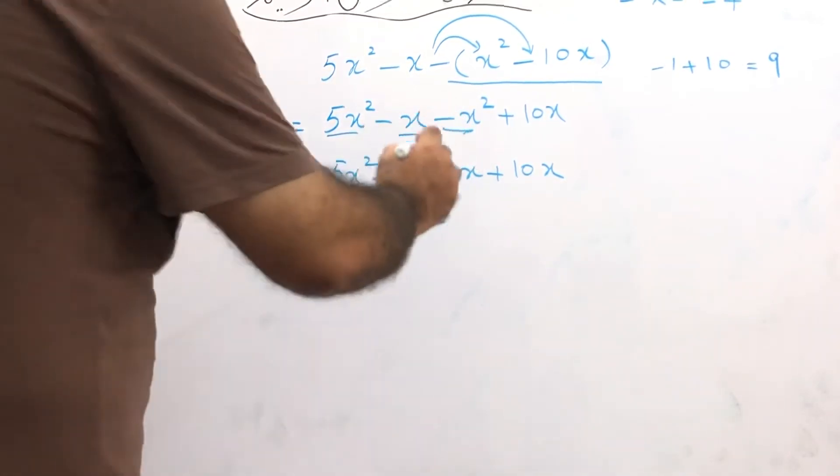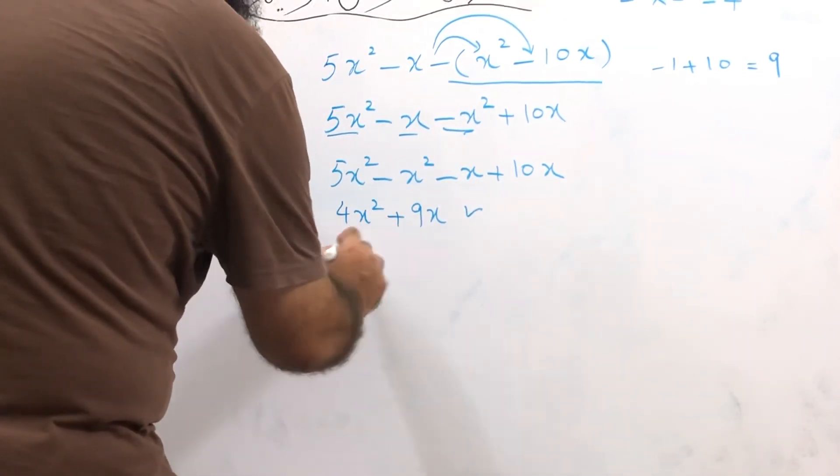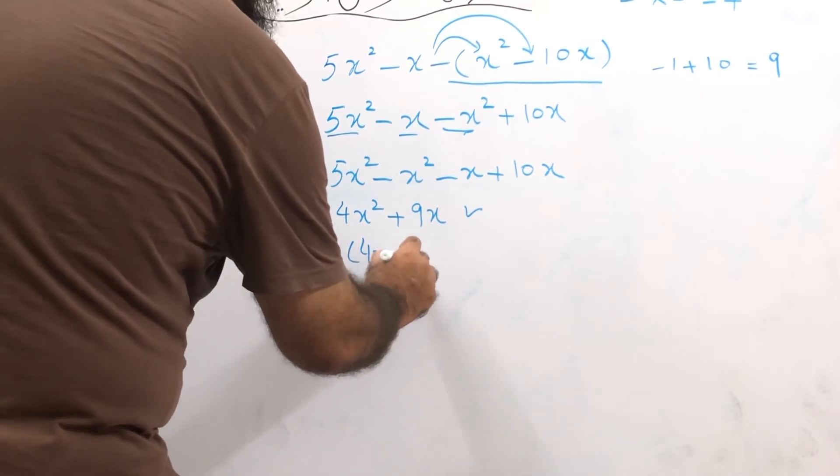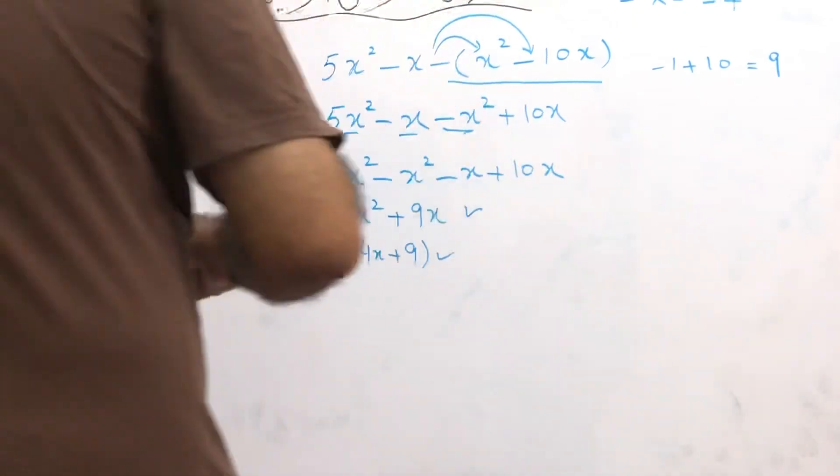This is the answer, or you can take x common from this expression, so it can be x times (4x plus 9). This is also good, this is also okay as the answer.